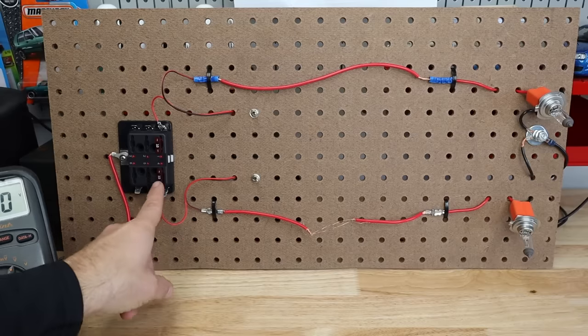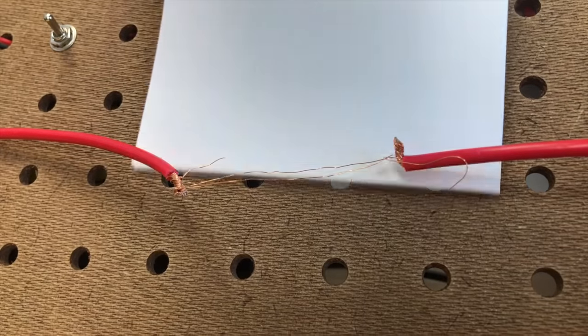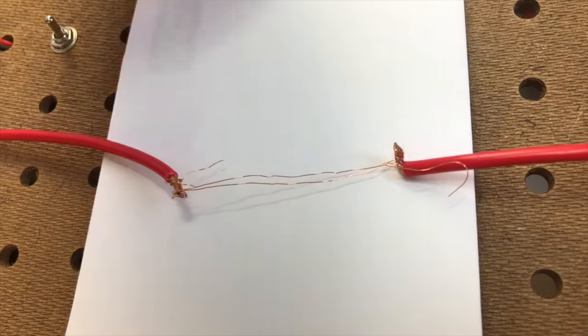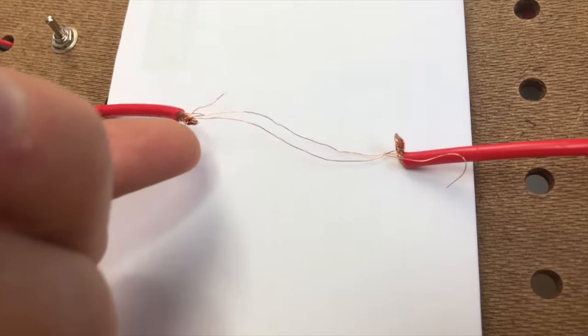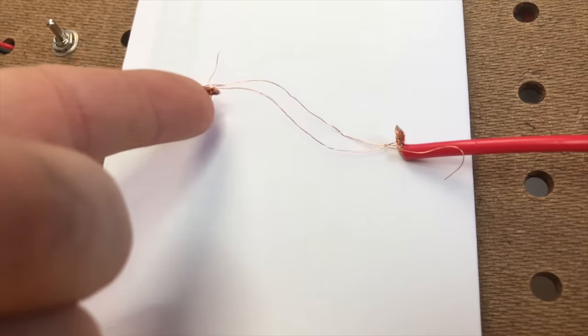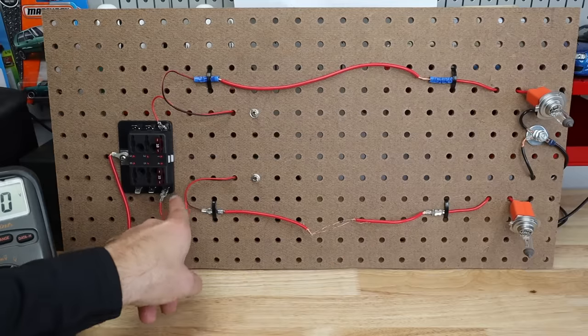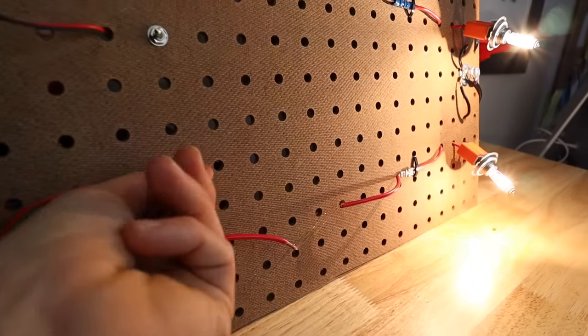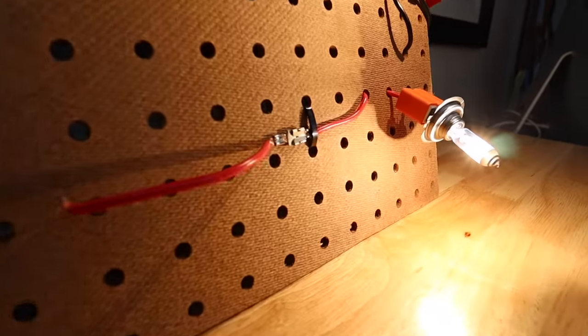On the bottom, same thing - fuse to a switch and then we have where I have taken this wire and cut all but two strands so there's only two tiny strands of wire connecting from the switch to the bulb and as you can see it still works.